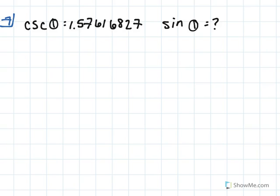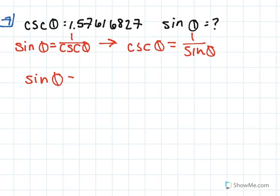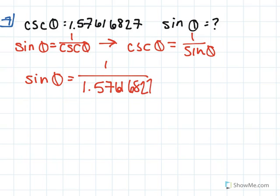In this problem, we're given a value for cosecant of theta and asked to find sine theta. It's important to remember that sine theta is equal to 1 over cosecant theta, because cosecant theta is 1 over sine theta. So if we're given a value for cosecant of theta, all we have to do to find sine theta is plug that value into our identity. So we say 1 over 1.57616827, plug that into a calculator, and we have sine theta is equal to approximately 0.6345.